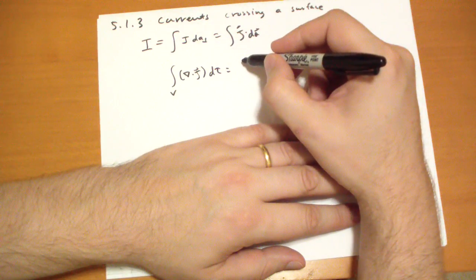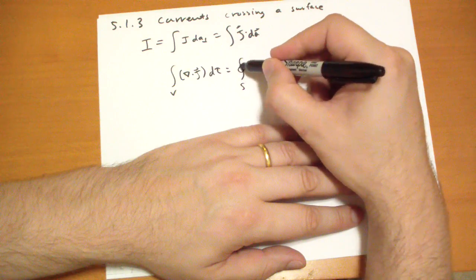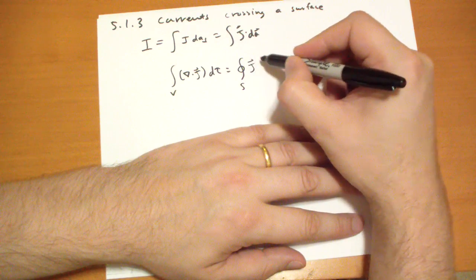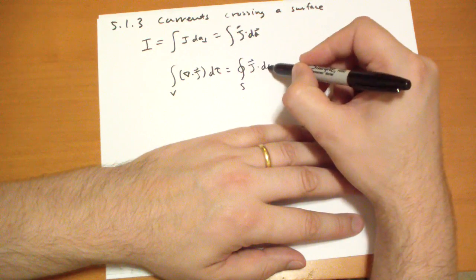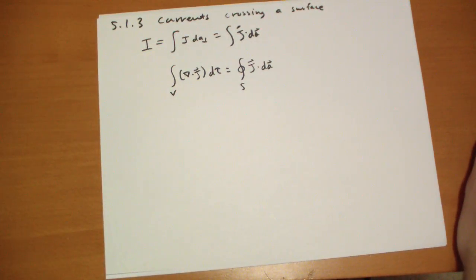And applying Gauss's theorem, Green's theorem, whatever, it's the same as the enclosing surface: J vector dot dA vector. Look at that! So the current flowing into or out of a certain volume through the surfaces is equal to the accumulation or the losing of the current inside.